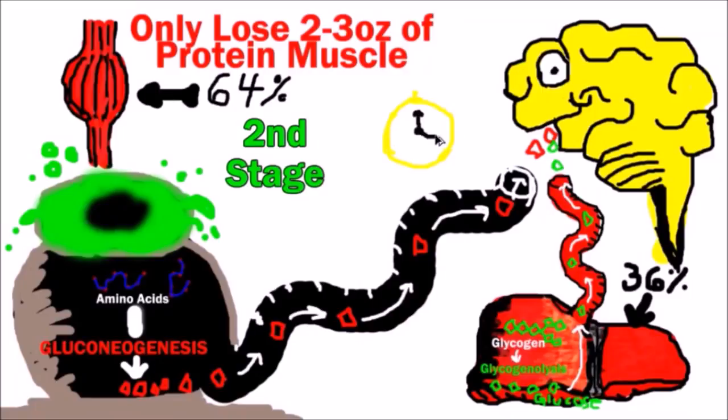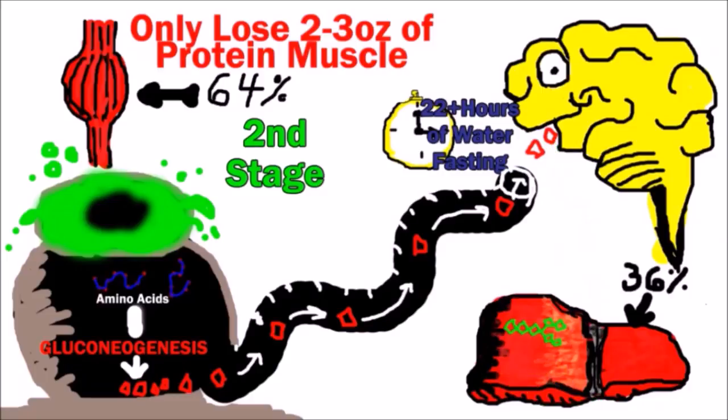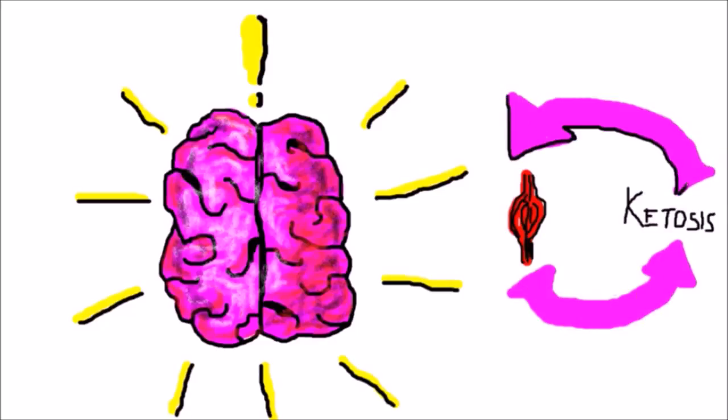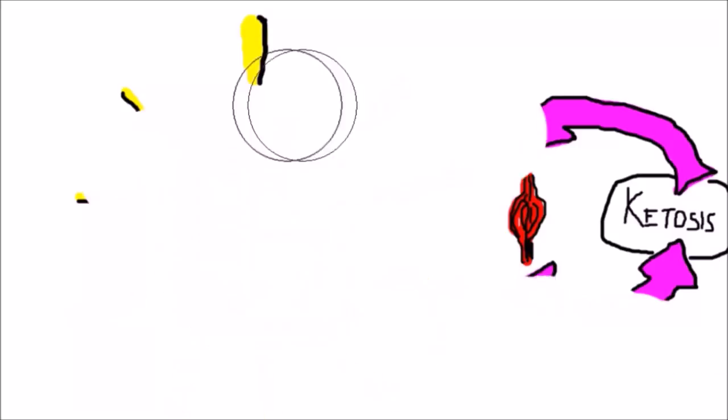Now, the second stage is when your body has fasted past the 22 hours and no longer has the glycogen stores. The brain knows this and will switch to a stage where it spares protein in the body and moves to ketosis.